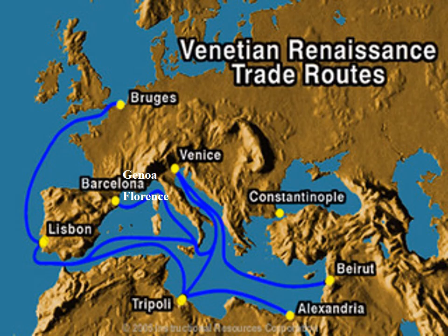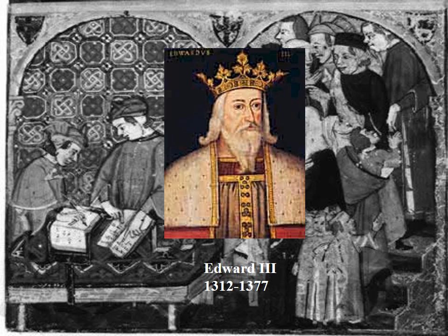The end of the crusades left many European princes holding new estates in the eastern Mediterranean. Trade was renewed and the flow of coin money created a need for merchant bankers. Venice and Genoa became major centers of Mediterranean commerce, while Florence emerged as a center of banking. The Bardi and Peruzzi families were dominant in Florence in the 14th century and established branches in other parts of Europe. Both extended substantial loans to Edward III of England to finance the Hundred Years War against France, but Edward defaulted and the banks failed.